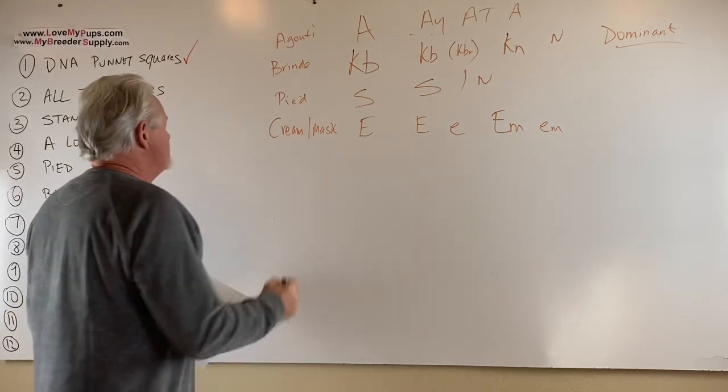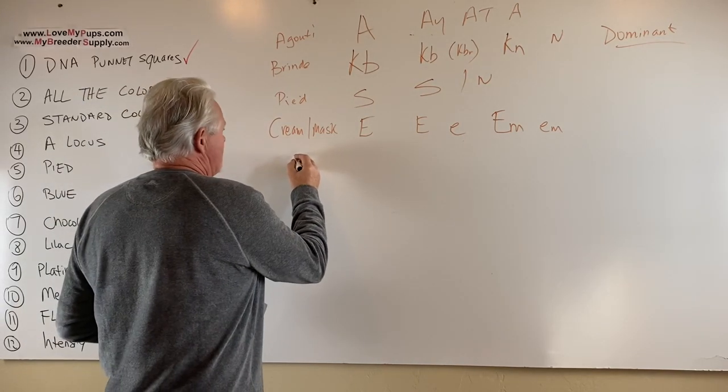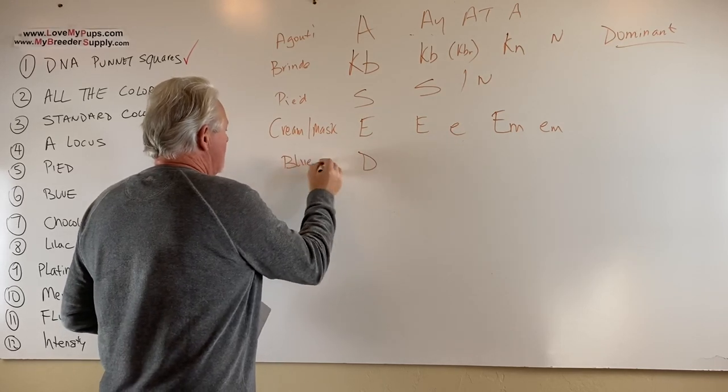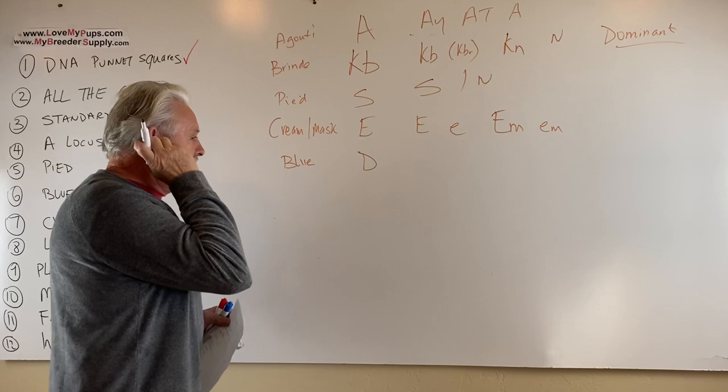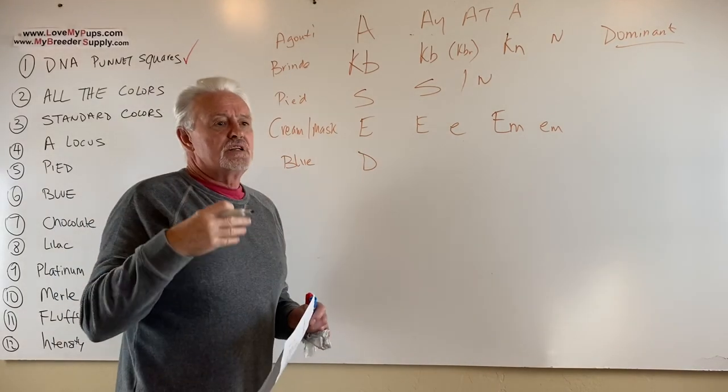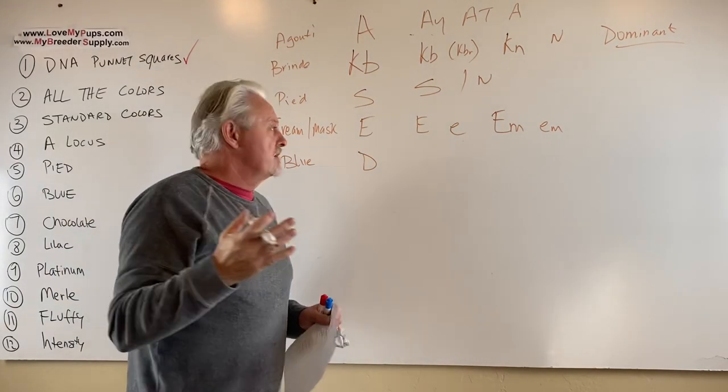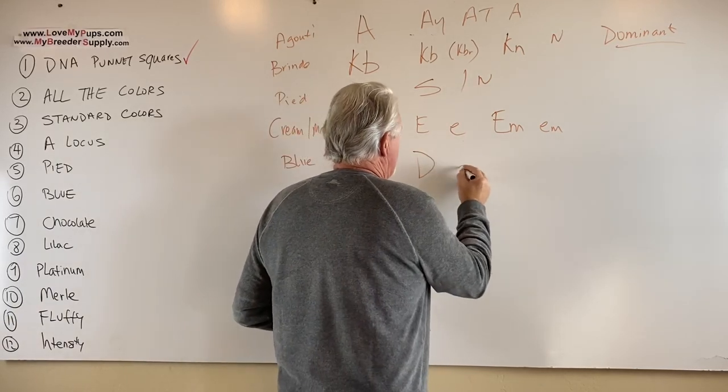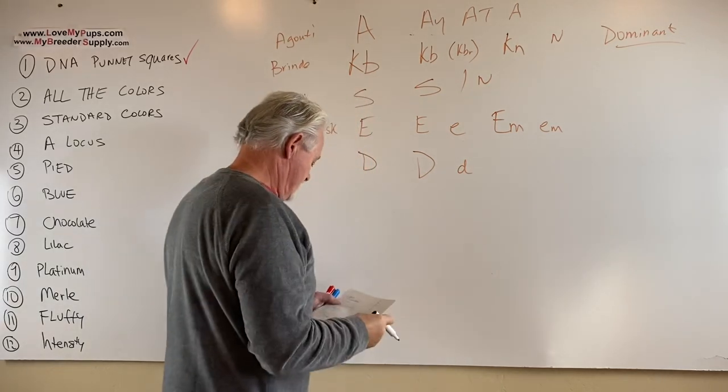Okay, next one is what we call the blue gene. It's actually the dilution gene, D, which is responsible for bluing. It's really a gene that if you have two copies of it, it dilutes the color that's present. So this is either big D, it doesn't exist, or little d, it does exist. Recessive gene.